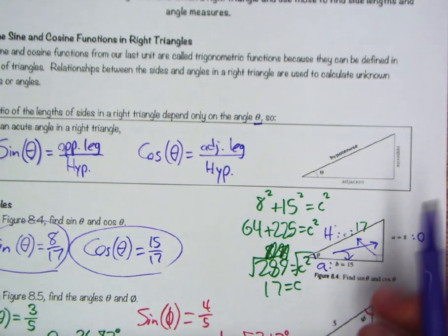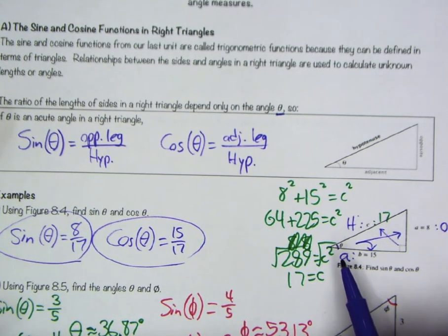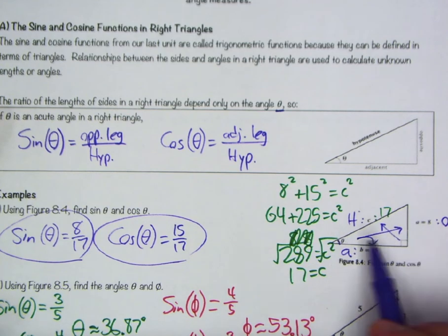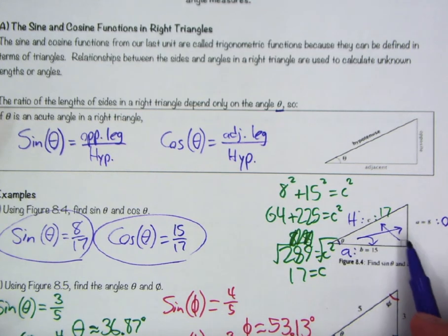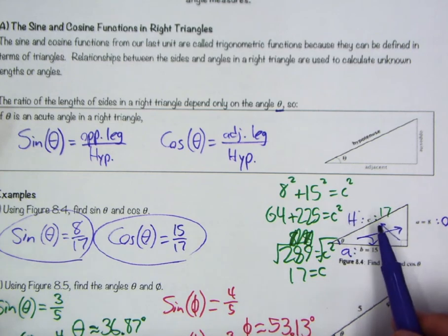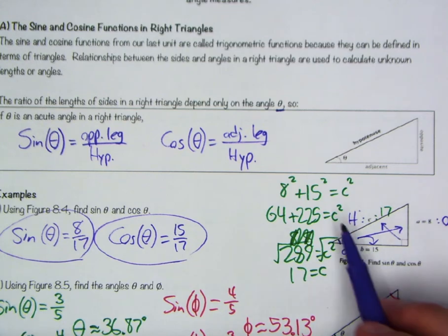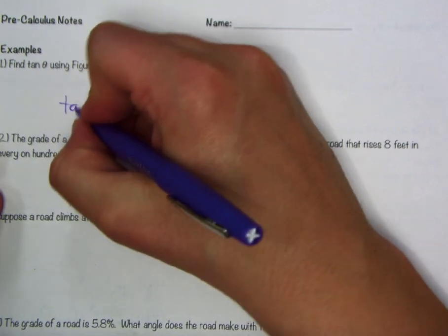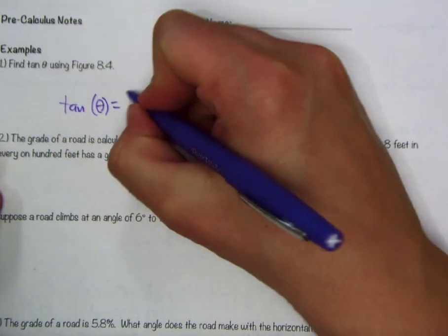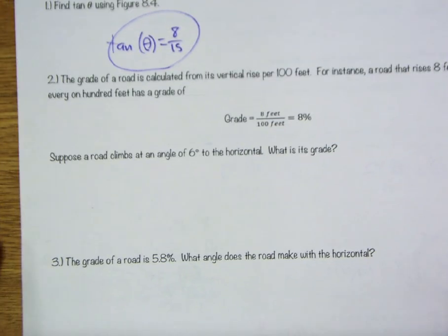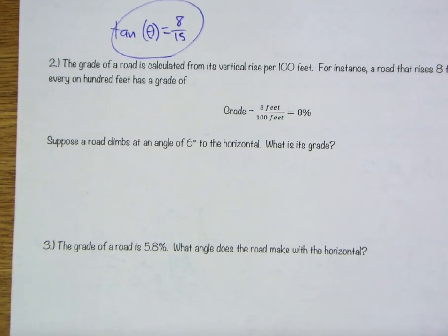This asks us to find tangent of theta using figure 8.4. So not actually performing the arc tangent and finding what theta is. Literally just setting up tangent of theta. So once again, I know my opposite is 8. I know my adjacent is 15. And we can ignore the hypotenuse because that value of 17 is not actually a necessary side length for our tangent ratio. So it's just going to be opposite over adjacent, which is 8 over 15. Tangent of theta is equal to 8 over 15. There we have it. Obviously, you could perform the arc tangent, but there's no reason to. We weren't asked for theta. We were asked for the trig function.